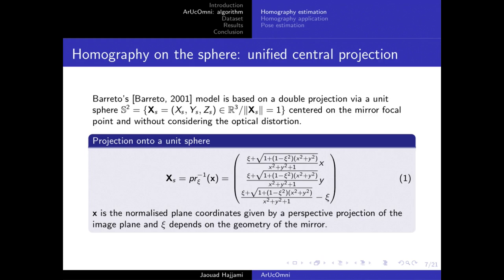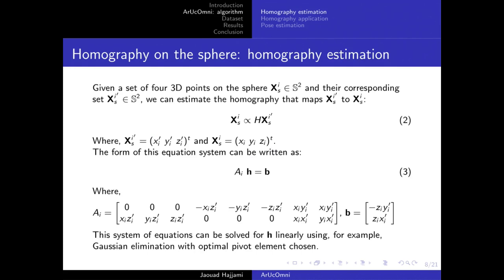Here is the unified central projection model used in this paper, which is from Barreto. The model is based on a double projection via a unit sphere centered on the mirror focal points without considering optical distortions. Formula 1 is used to project the normalized image points onto the sphere.